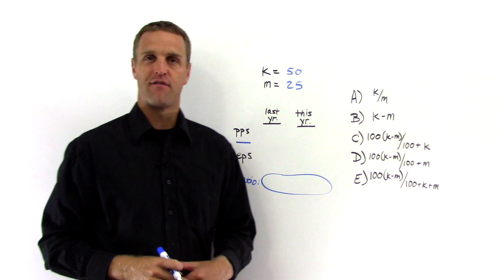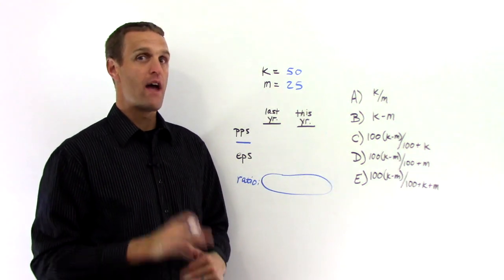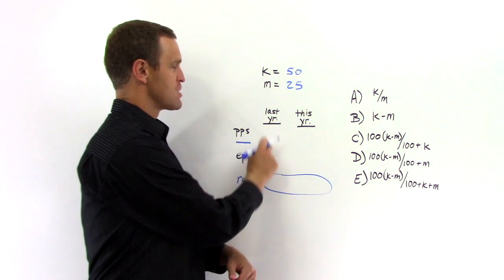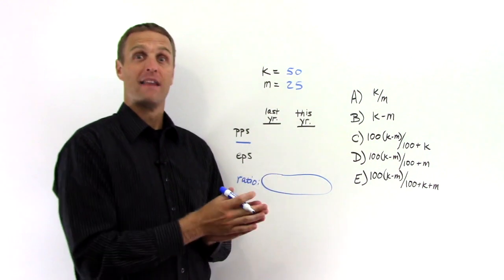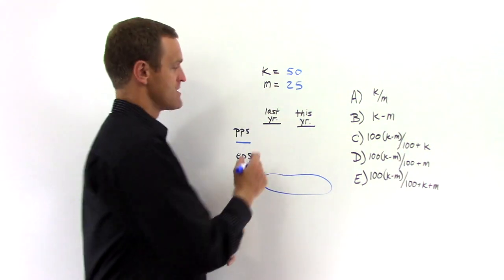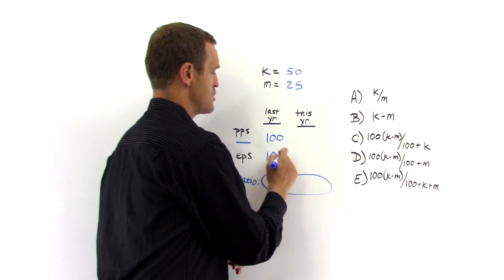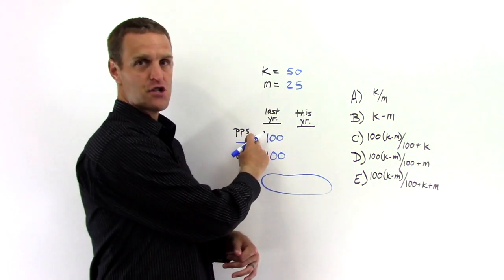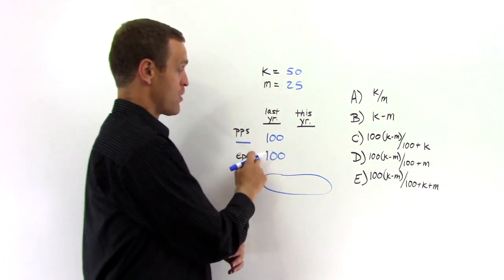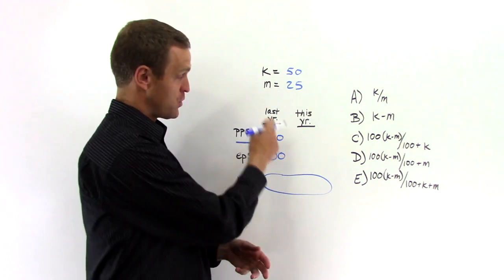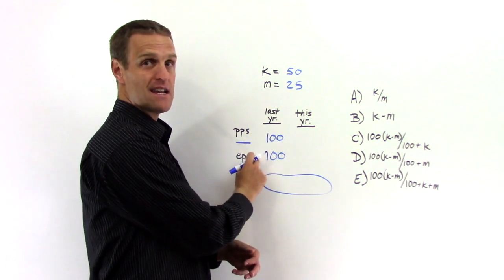I'm going to choose 50% for K, 25% for M. And we also need a starting point from last year. When we're dealing with percents, a great starting point is 100. So let's just assume that the price per share last year was 100. Earnings per share last year, 100.